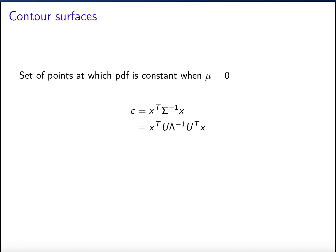We're going to express the quadratic form in terms of the eigendecomposition of the covariance matrix. The covariance matrix is symmetric, so it has an eigendecomposition where U contains the eigenvectors in its columns and lambda is a diagonal matrix containing the eigenvalues. The inverse is equal to U lambda-inverse U-transpose, because U is an orthogonal matrix whose inverse equals its transpose.